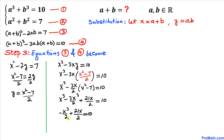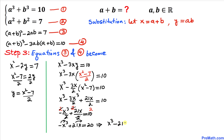Removing the fractions by multiplying both sides by 2 gives −x³ + 21x = 20. Moving everything to one side, we get x³ − 21x + 20 = 0. This is our cubic equation.